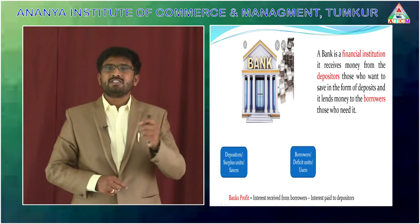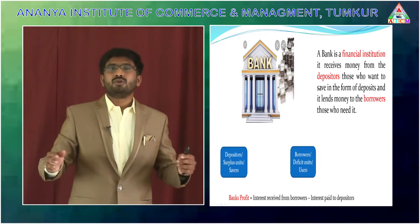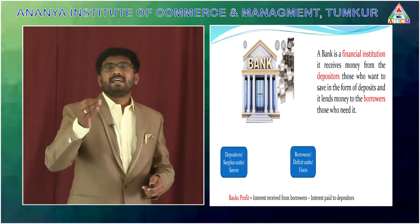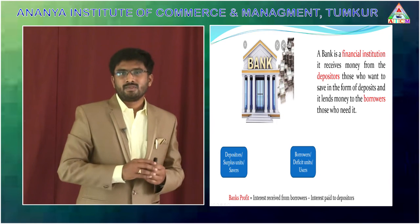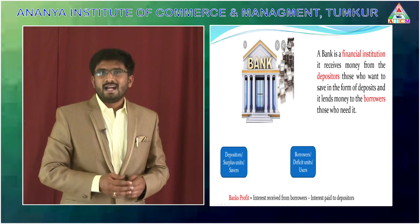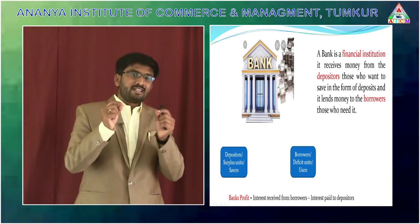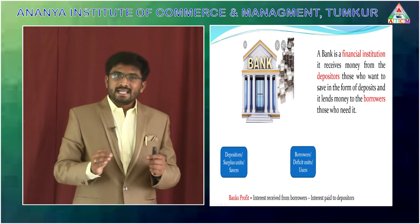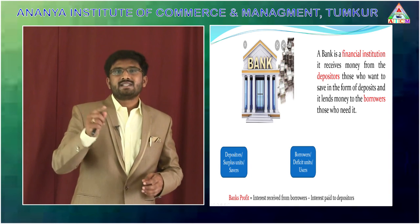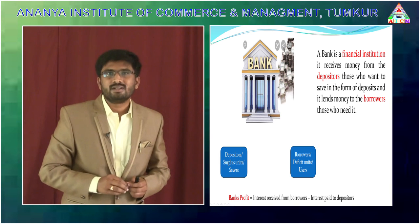Bank is a financial institution — it receives money from the depositors and the same money is lent out to the borrowers, one who need it. How does the bank make profit? The bank makes profit by charging interest to the borrowers for giving loans to them. Whatever interest is collected from the borrowers, the bank pays interest to the depositors for their deposits. The difference between interest charged to borrowers and interest paid to depositors becomes the bank's profit. For example, 6% interest is charged to borrowers, but the bank pays only 3% interest to depositors — making a 3% profit.